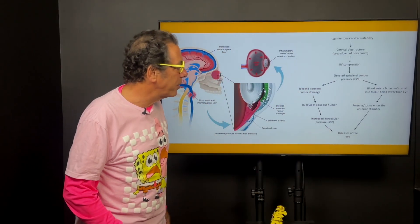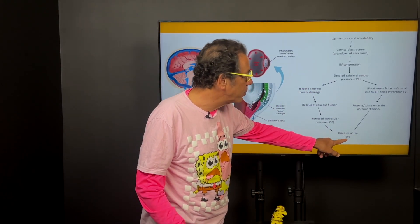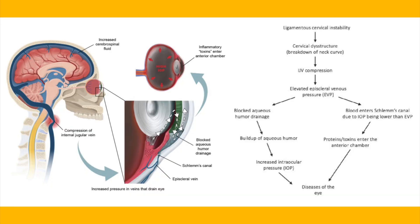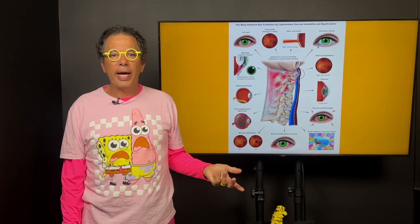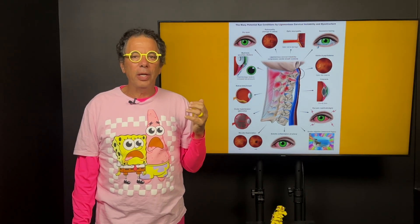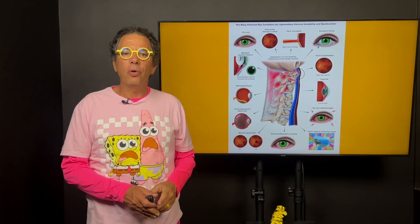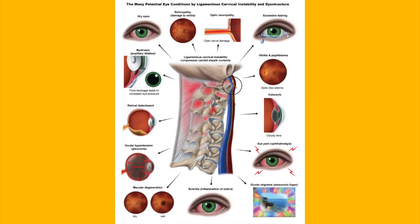So compressed jugular vein causes the episcleral veins not to be able to drain. And then of course you can get all kinds of things, including dry eye disease, which is becoming more and more prevalent. When someone doesn't have diabetes or they don't have high blood pressure and they eat relatively well, and they have all kinds of eye pain, redness, dry eyes, a scratchy feeling, blurry vision, trouble focusing, or they always feel like they're on a boat, kind of like lightheaded all the time, especially when they're in a car. These are all signs of cervical destructure or ligamentous cervical instability.